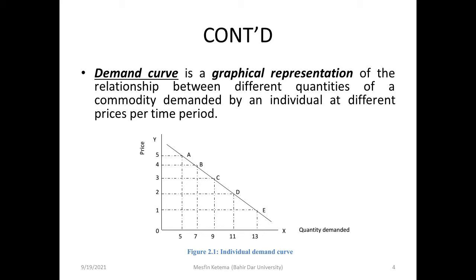Looking at the demand curve, if we plot point A, point B, point C, point D, and point E, the Y-axis represents price and the X-axis represents quantity demanded. For example, from the table, a price of $5 corresponds to 5 kg of oranges.